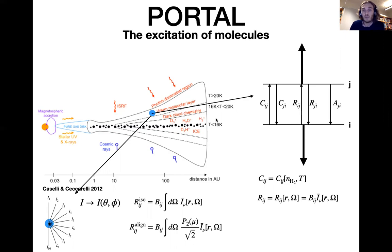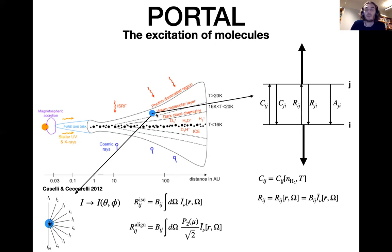The collisional rates are a function of the temperature and the density, and they are isotropic. However, the radiative rates — absorption and stimulated emission — are also dependent on a radiation field. The radiation field in a highly anisotropic structure like a protoplanetary disk is also anisotropic, and the radiative interactions therefore also have an anisotropic part to their rates.